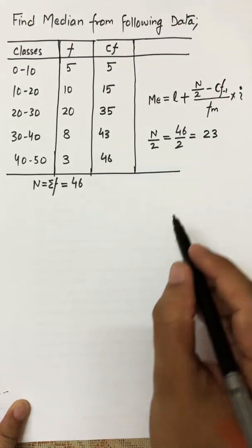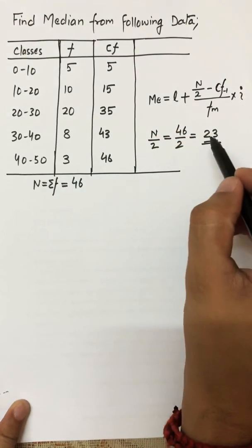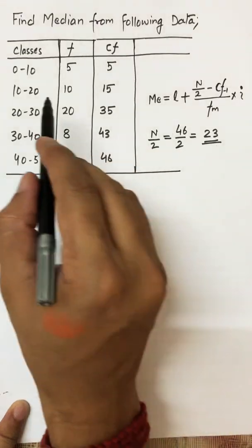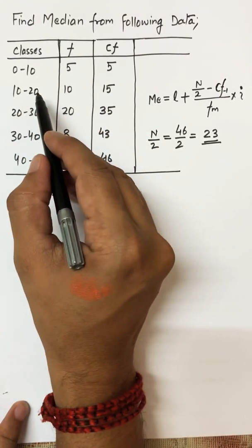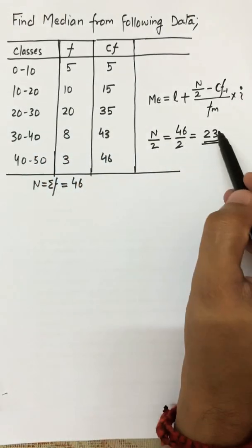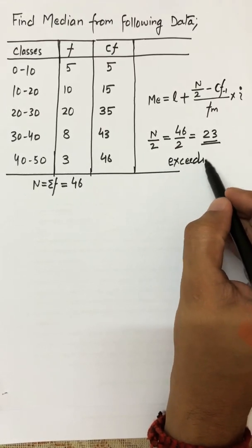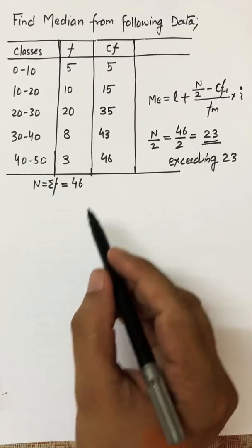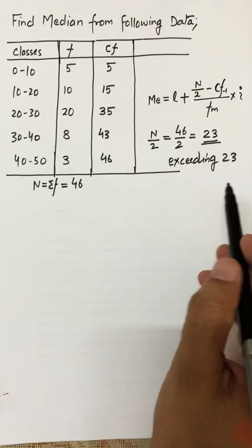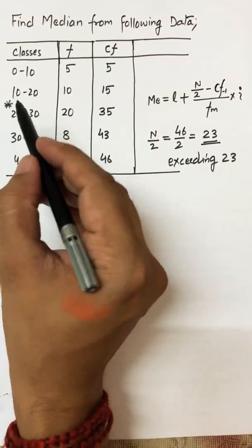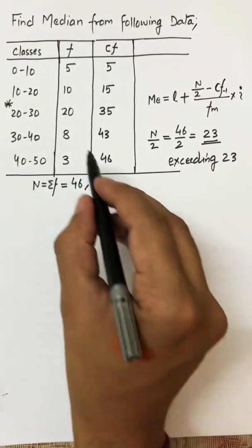Now I compare this value of 23 with the cumulative frequencies and select the class which exceeds 23 — not equals, but exceeds — because the upper limit of the class is excluded. So I check: 5 is less than 23, 15 is less than 23, 35 is exceeding. The moment I find a value which exceeds my N by 2 value, that class becomes my median class, which is 20 to 30.